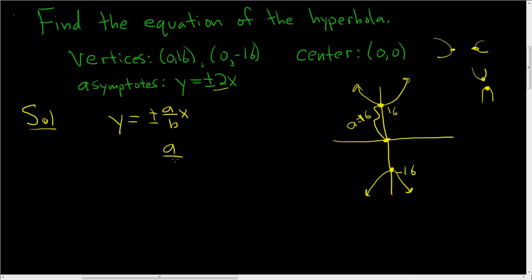So a over b, we can set that equal to 2. And then we know what a is. a is 16, so we get 16 over b equals 2. You can multiply by b here. And so you get 16. Write it over here. 16 is 2b. So b is 8.